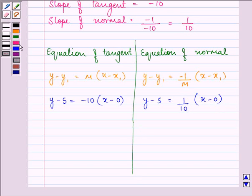Now let us simplify it. We have y minus 5 plus 10x equal to 0 here and here we have 10y minus 50 equal to x.